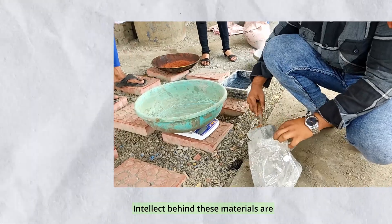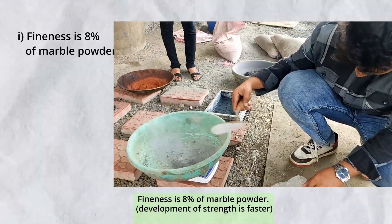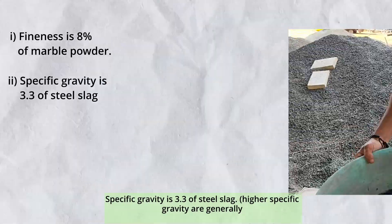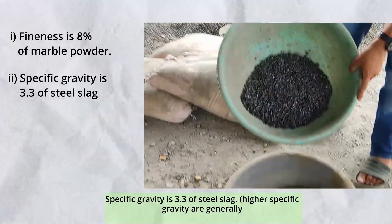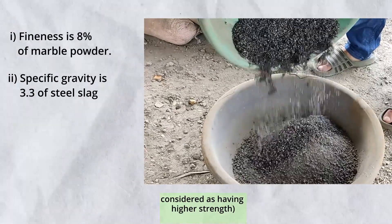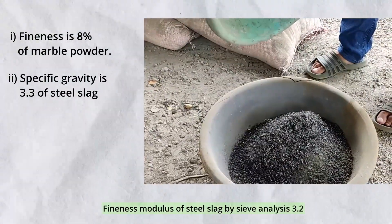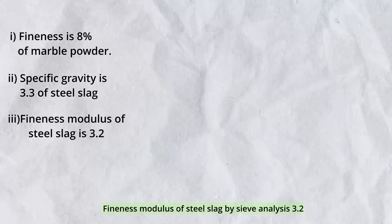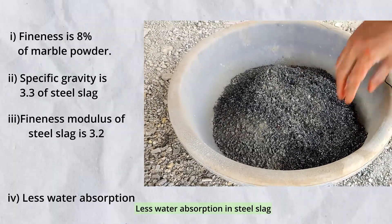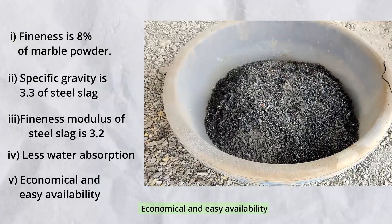The rationale behind these materials: fineness is 8% for marble powder, and development of strength is faster. Specific gravity of steel slag is 3.3 — higher specific gravity is generally considered as having higher strength. Fineness modulus of steel slag by sieve analysis is 3.2, indicating coarse sand. Steel slag also has less water absorption and is economical with easy availability.